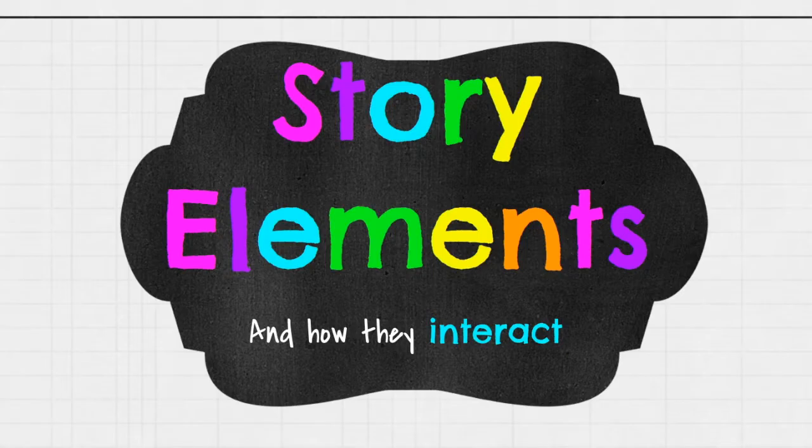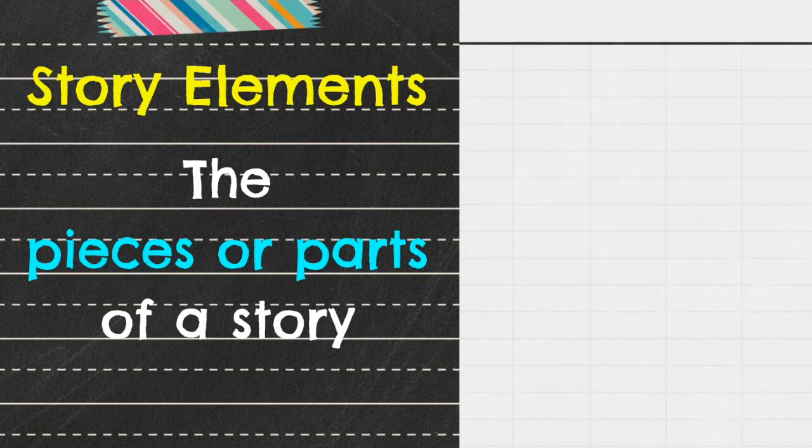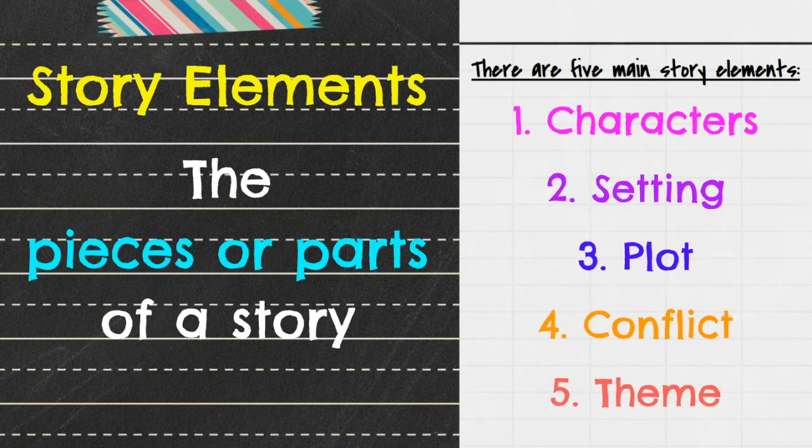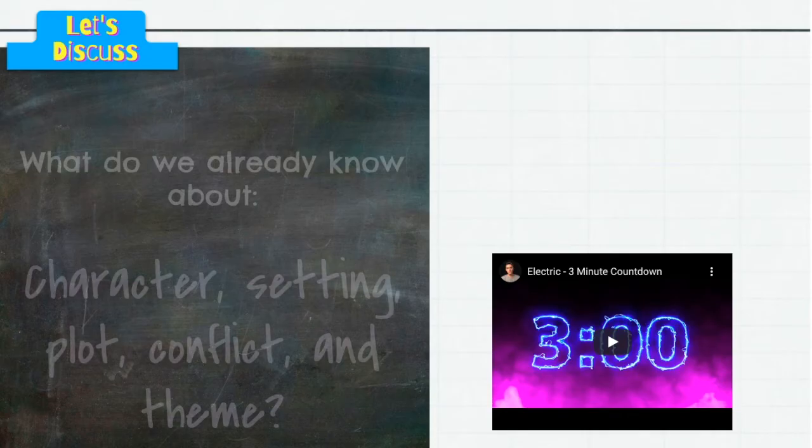We're going to look at those components, our story elements, and then we are going to look at how they interact together. So first, what is a story element? Basically, it's the pieces or parts of a story, and there's typically five main elements: characters, setting, plot, conflict, and theme.